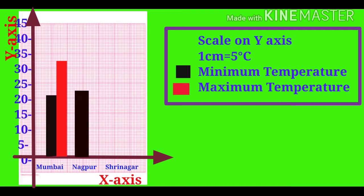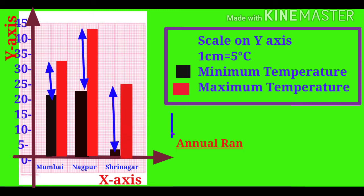Nagpur: minimum temperature is 22 degrees Celsius and maximum temperature is 44 degrees Celsius. Srinagar: minimum temperature is 2.5 degrees Celsius and maximum temperature is 24 degrees Celsius.